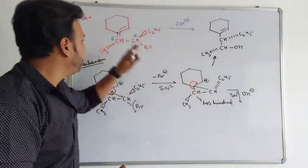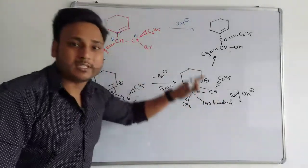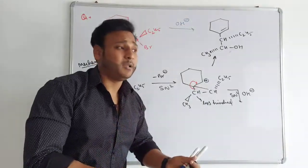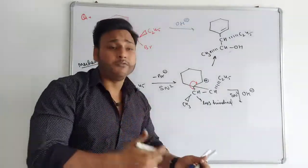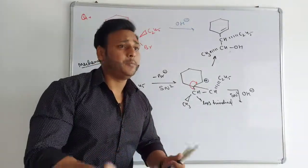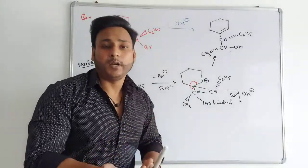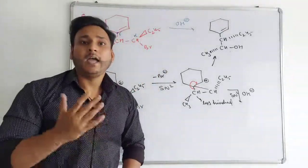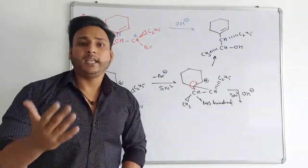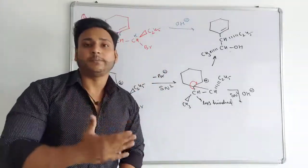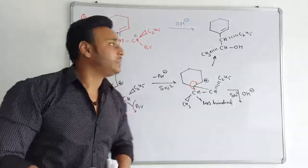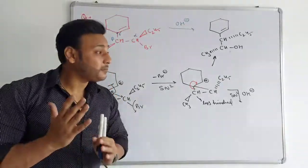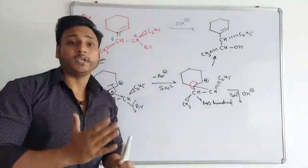In NGP, you can get a three-membered ring, a four-membered ring, or a five-membered ring depending on the position of the neighboring group. This was NGP in Nucleophilic Substitution Reaction, which is a very important chapter from the IIT and competitive exam point of view.